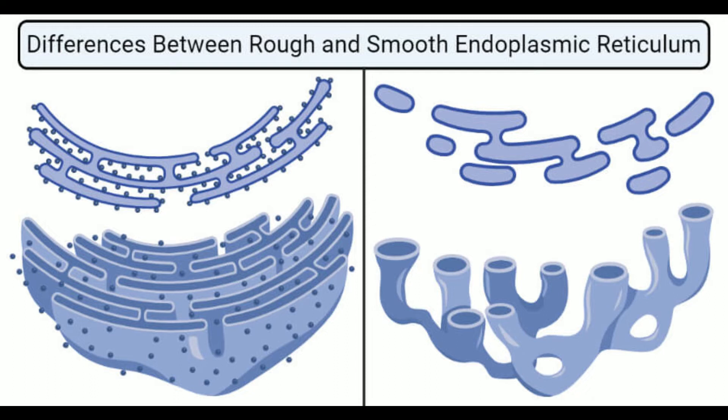Smooth endoplasmic reticulum (SER) is a type of endoplasmic reticulum consisting of tubular vesicles that lack ribosomes on the outer surface and is involved in the synthesis and storage of lipids. Smooth ER is a part of the endomembrane system that forms important structural lipids like cholesterol and phospholipids. The term smooth indicates the absence of ribosomes on the outer surface, which results in a smooth outer surface. Smooth ER is formed from rough ER after the shedding of the existing ribosomes from its surface.